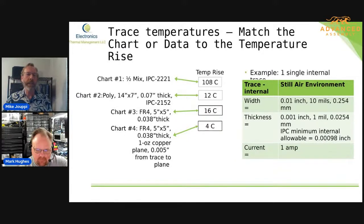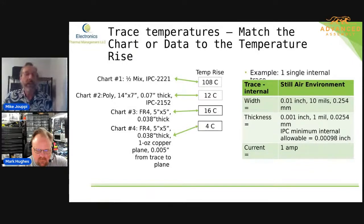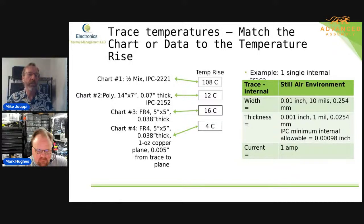So if you can get your copper planes as close to the traces as you possibly can without violating any voltage or current rules, you see a significant drop in temperature because now the energy is conducting down to that plane and spreading. The energy has an opportunity to get up into the rest of the board to help conduct and radiate away. And if you tie that copper plane to your mounting points — whether wedge locks or bolted fasteners — you can even lower it significantly more.